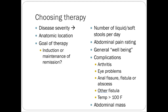Choosing therapy mostly depends on disease severity, anatomic location, and your goal — whether you want to induce remission or maintain it. Symptoms to target include minimizing liquid soft stools per day, abdominal pain, and complications like arthritis and fistulas. In severe cases, Crohn's complications can cause an intra-abdominal infection or sepsis, so preventing that progression is critical.